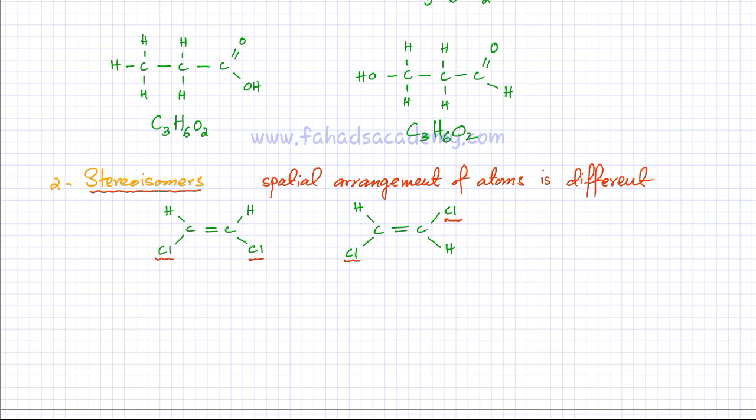So you have two types of isomers: structural isomers, where the connectivity of atoms is different, and stereoisomers, where the connectivity is the same but the direction of the bonds and the spatial arrangement is different.